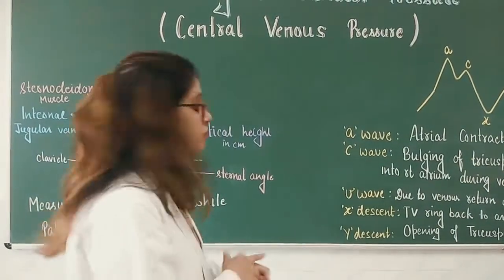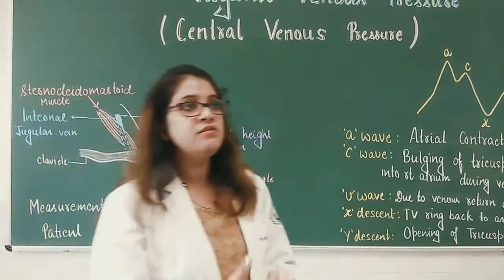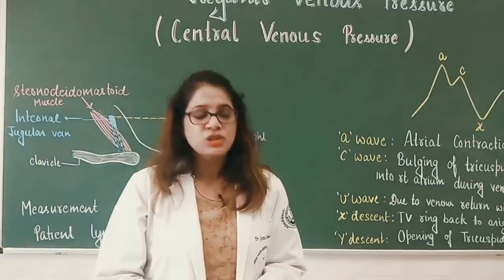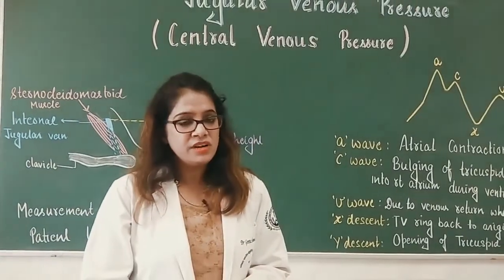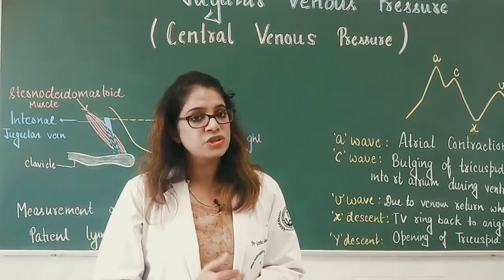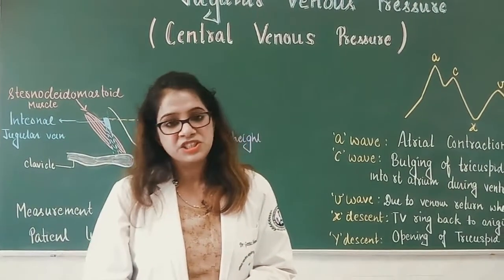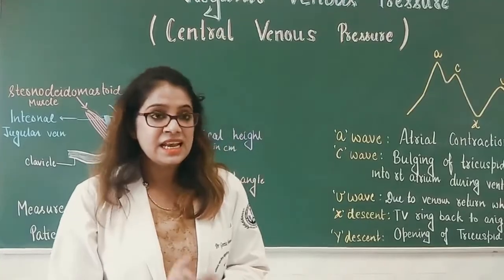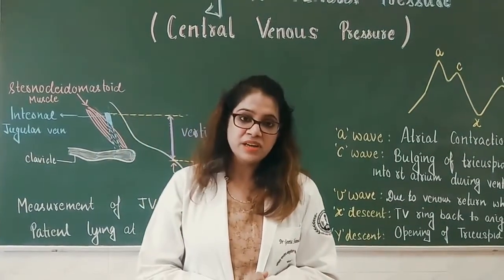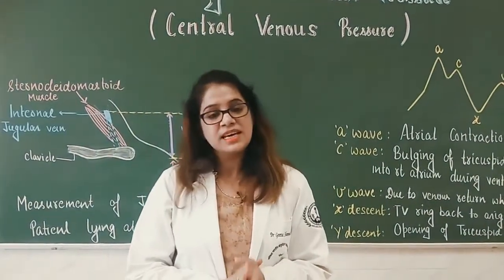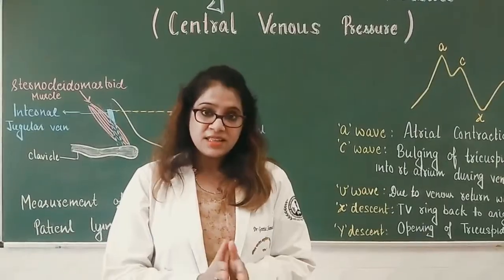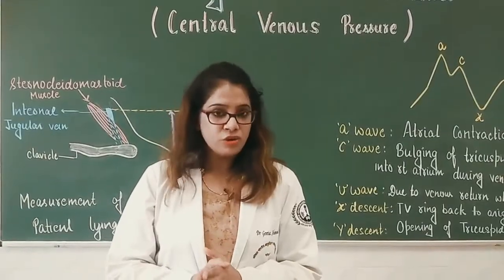The normal value of central venous pressure or jugular venous pressure is less than seven millimeters of mercury or less than nine centimeters of water.